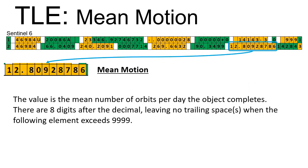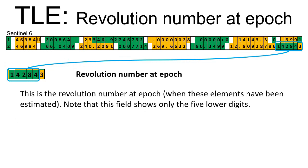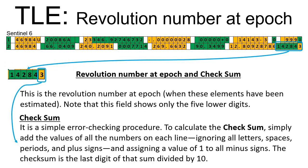Mean motion is the mean number of orbits per day the object completes. Revolution number at epoch is the revolution number at epoch. Check sum is a simple error checking procedure.